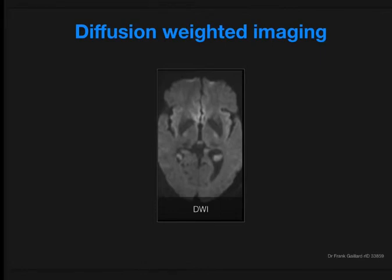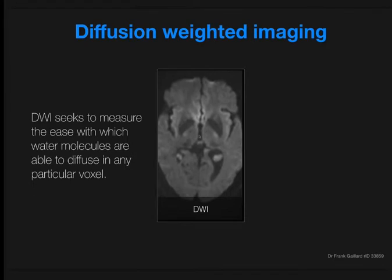The understanding of the underlying processes and the nomenclature in diffusion-weighted imaging is a little confusing. At a fundamental level, diffusion-weighted imaging seeks to measure the ease with which water molecules are able to diffuse in any particular voxel, and therefore it gives us an insight into essentially the histology of that tissue — how cellular it is, what the extracellular space is, what the intracellular space is.